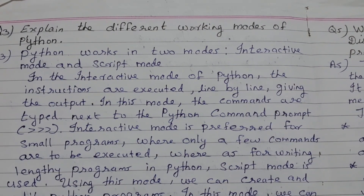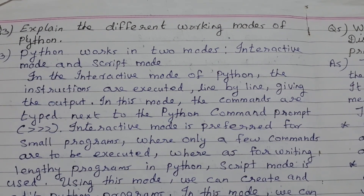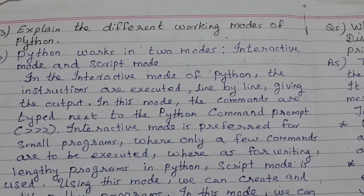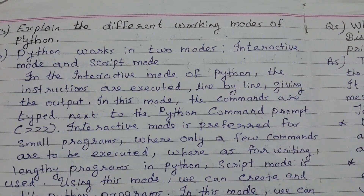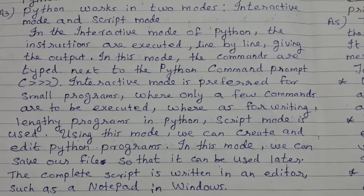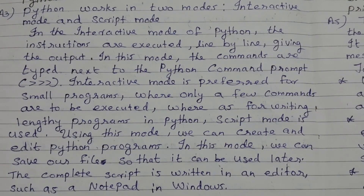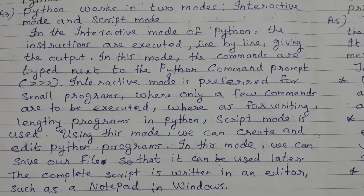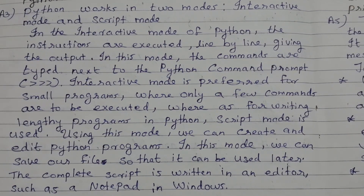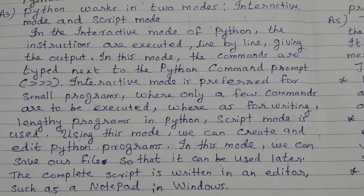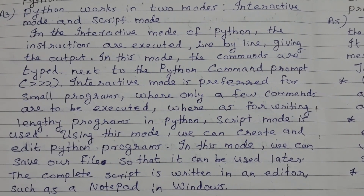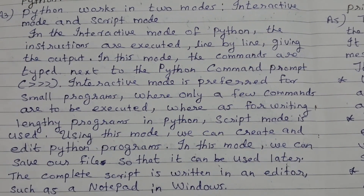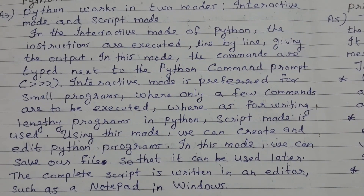Explain the different working modes of Python. Python works in two modes: Interactive mode and Script mode. In the interactive mode of Python, the instructions are executed line by line, giving the output. The commands are typed next to the Python command prompt. Interactive mode is preferred for small programs where only a few commands are to be executed. For writing lengthy programs, script mode is used. Using script mode, we can create, edit, and save Python programs so they can be used later. The complete script is written in an editor such as Notepad in Windows.